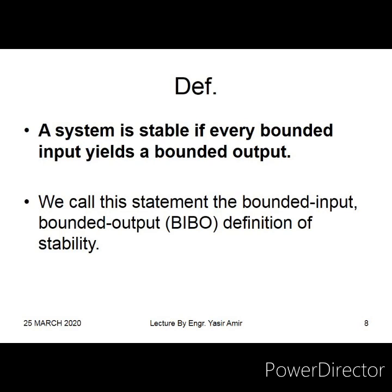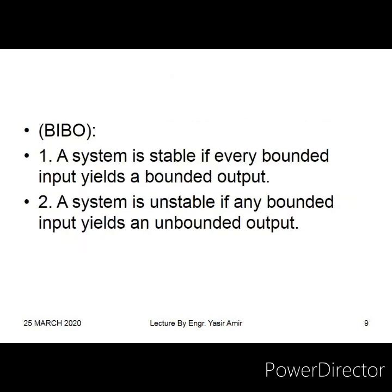The output is bounded from both the positive and negative sides. If the output remains bounded and does not grow to infinity, that type of system is called a stable system. According to the BIBO stability definition, our system is stable if every bounded input yields a bounded output. A system is unstable if any bounded input yields an unbounded output.